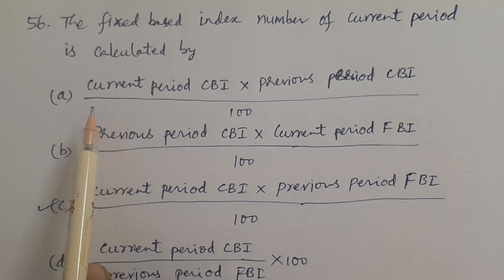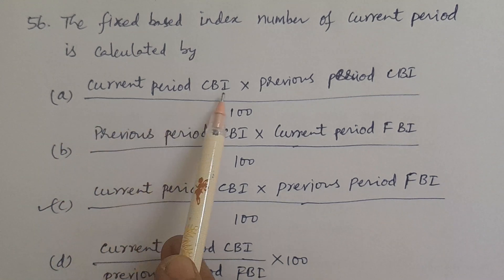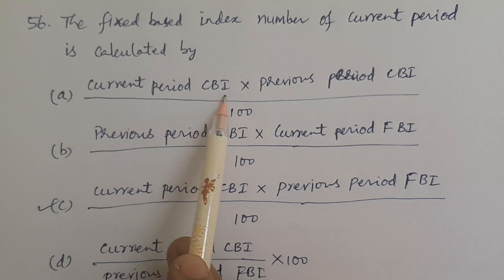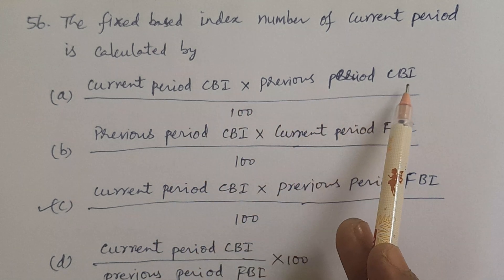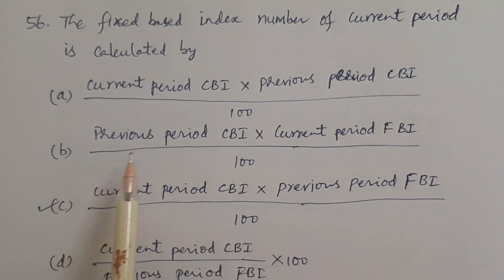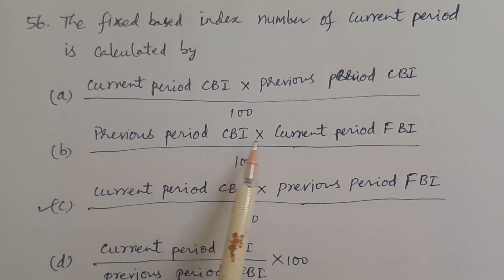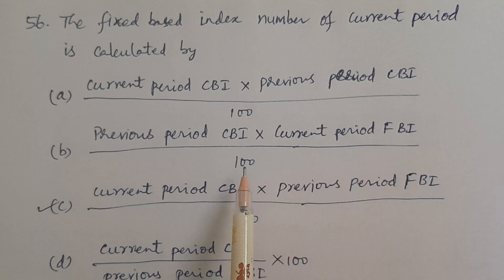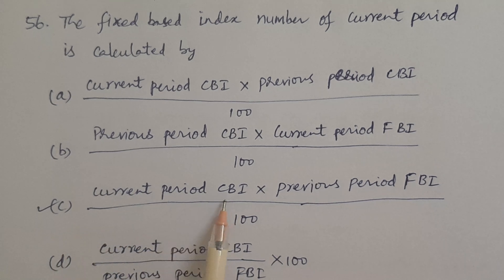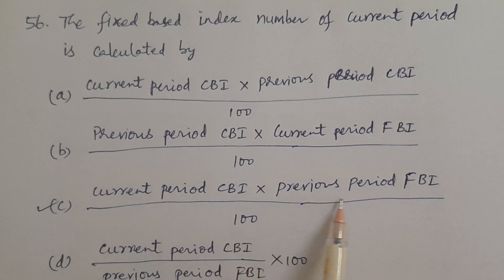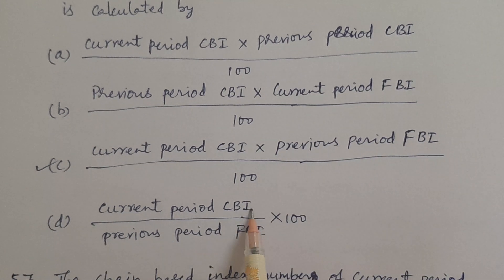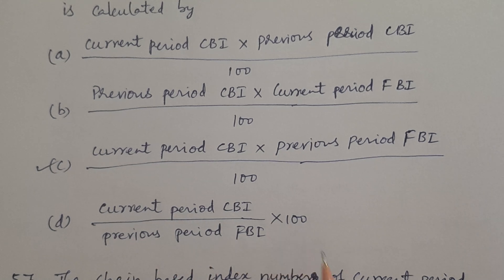Options: A. Current period CBI (chain base index) into previous period CBI divided by 100. B. Previous period CBI into current period FBI (fixed base index number) divided by 100. C. Current period CBI into previous period FBI divided by 100. D. Current period CBI divided by previous period FBI into 100.